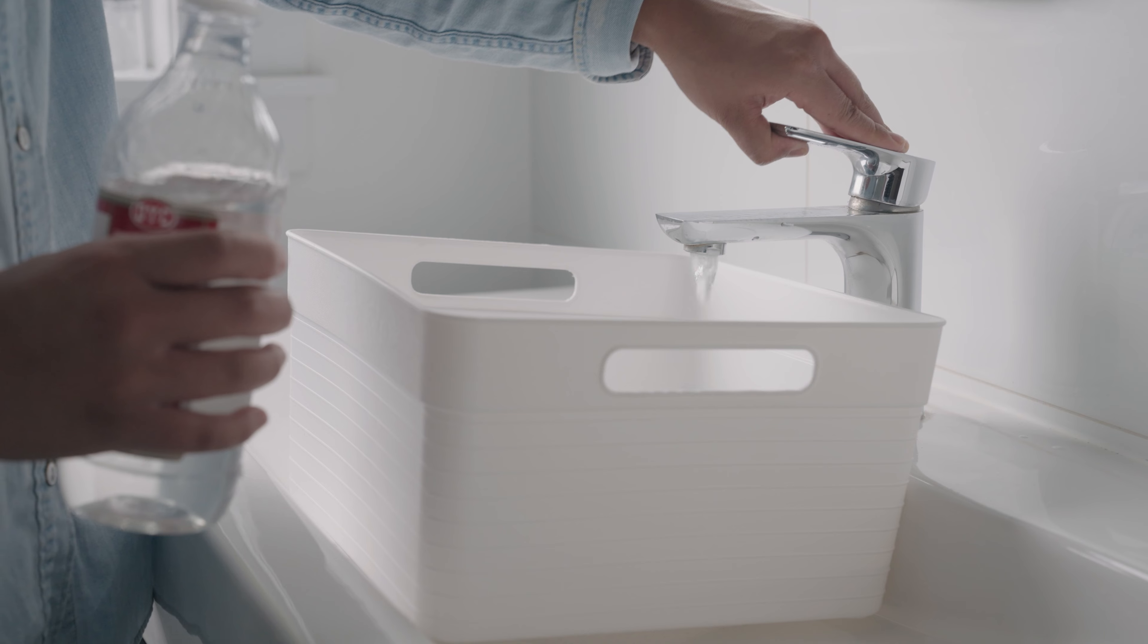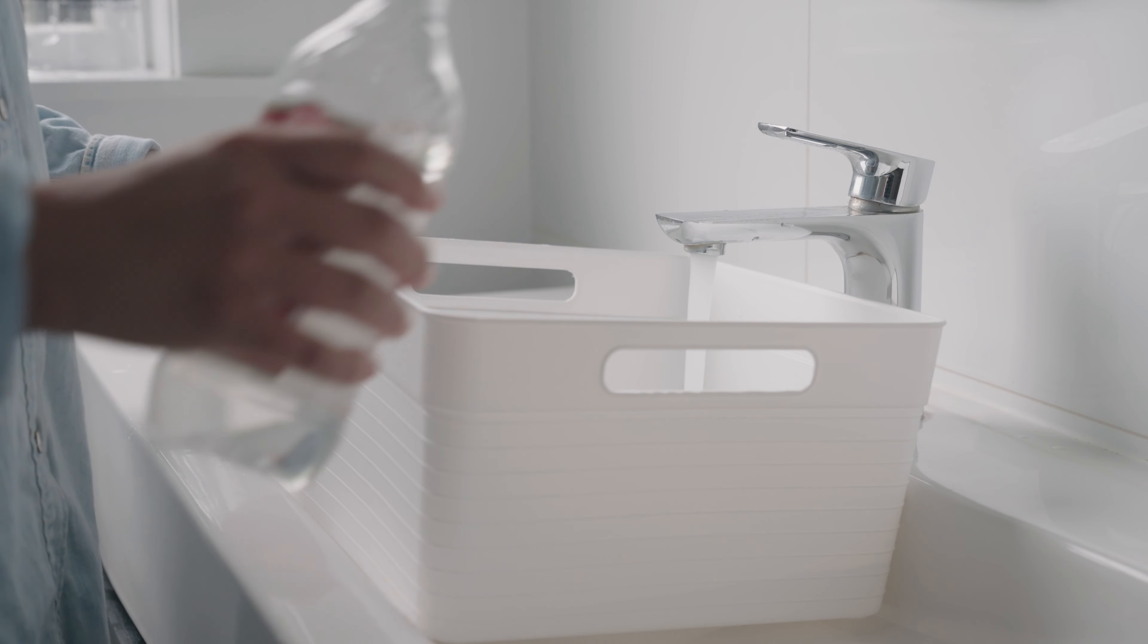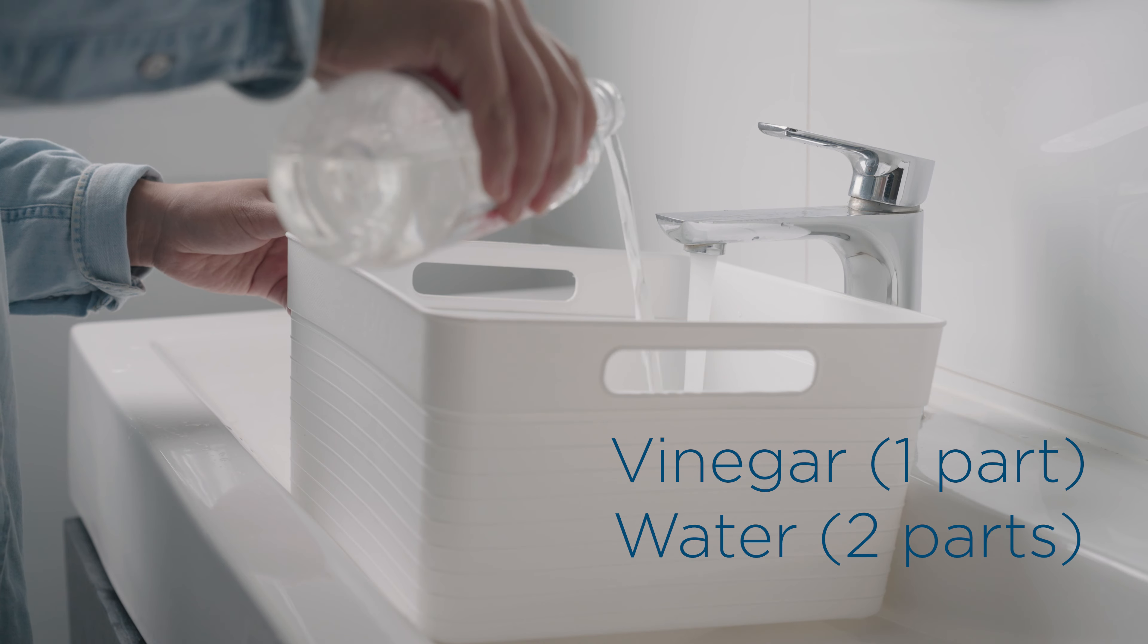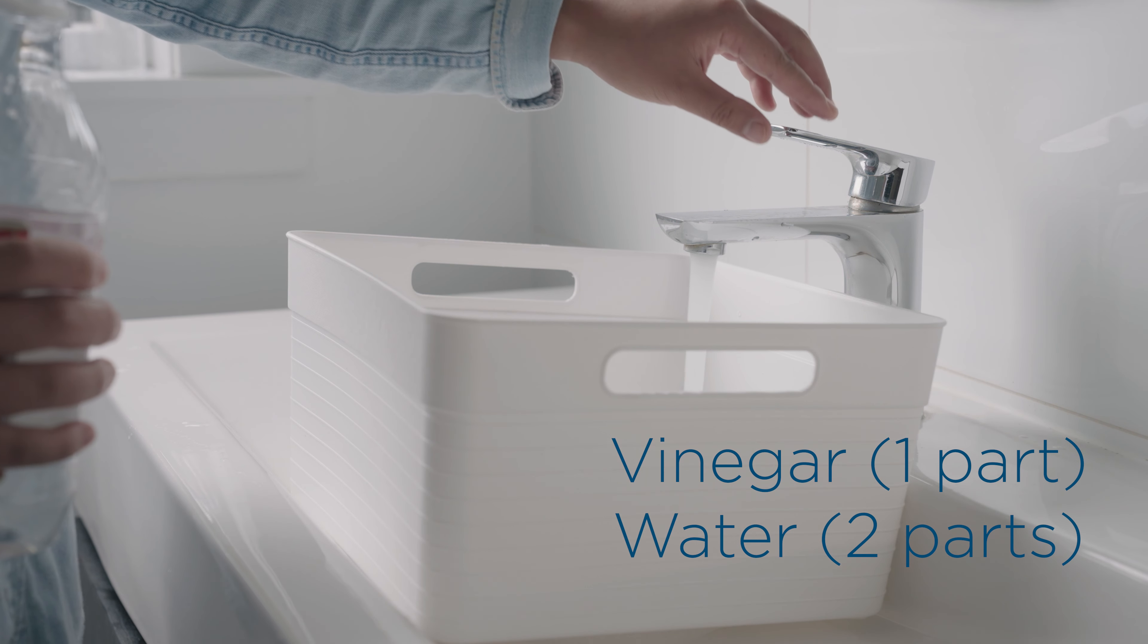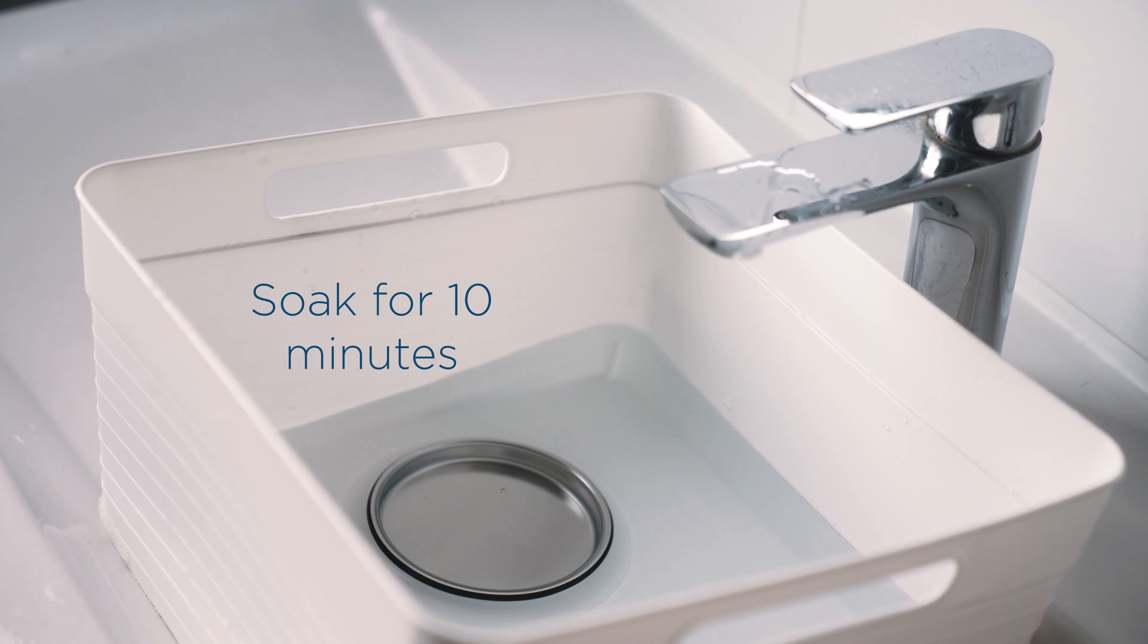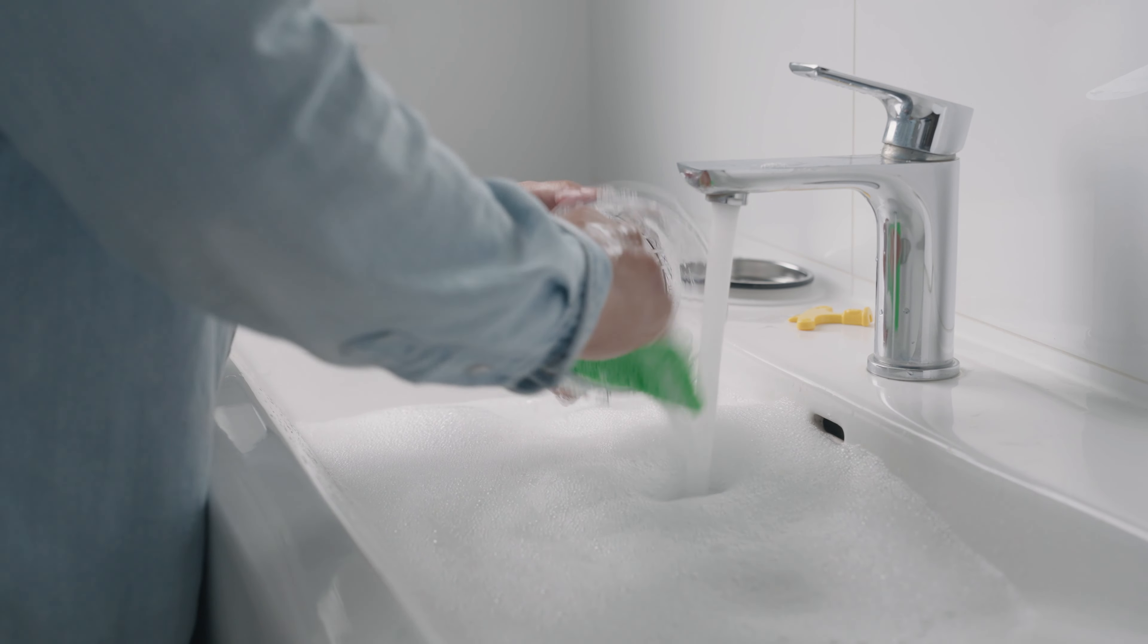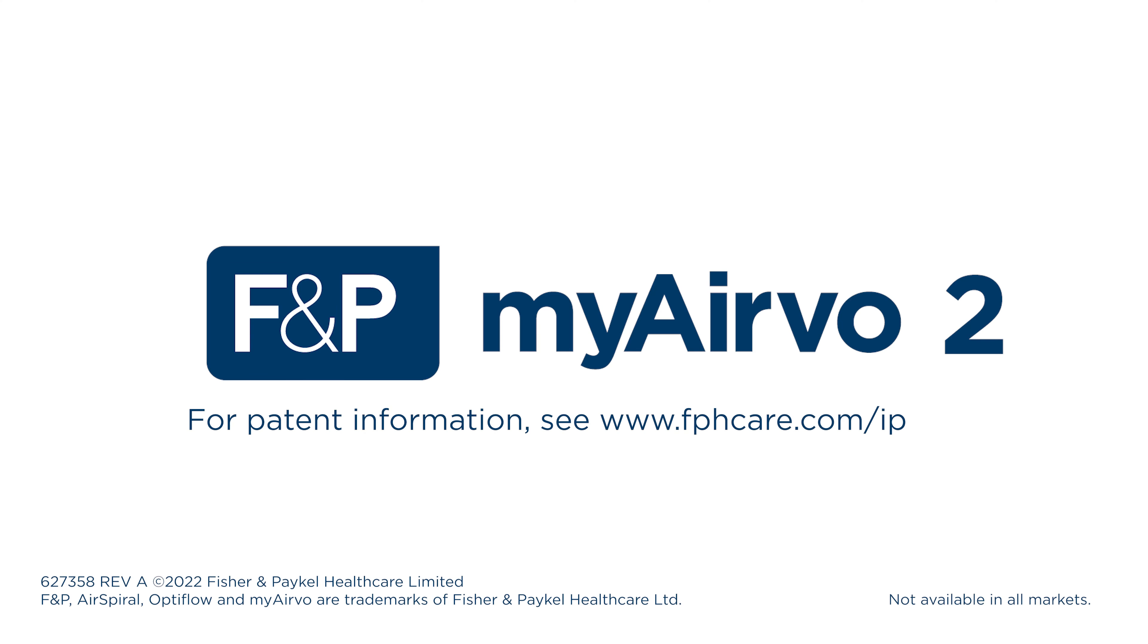Your chamber may discolour over time due to mineral deposits found in tap water. To reduce this build-up, soak the base in a solution of one part vinegar and two parts water for 10 minutes. Clean the chamber dome by following daily cleaning steps prior to next use.